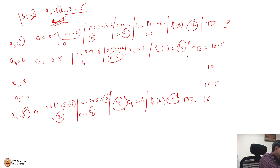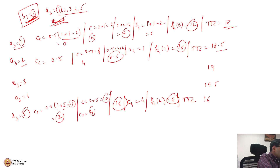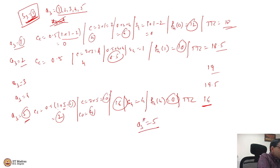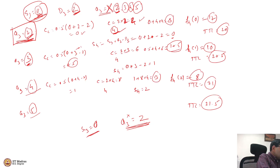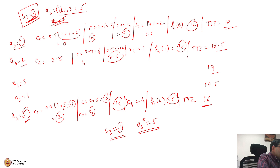When S3 = 1: ordering 1 unit costs $18, ordering 2 costs $18.5, ordering 3 costs $19, ordering 4 costs $19.5, but ordering 5 costs only $16. So the best action is A3* = 5 when S3 = 1. Notice the difference: when starting with 0 inventory, order 2 products; but when starting with 1 unit, the best action is to order 5 products.